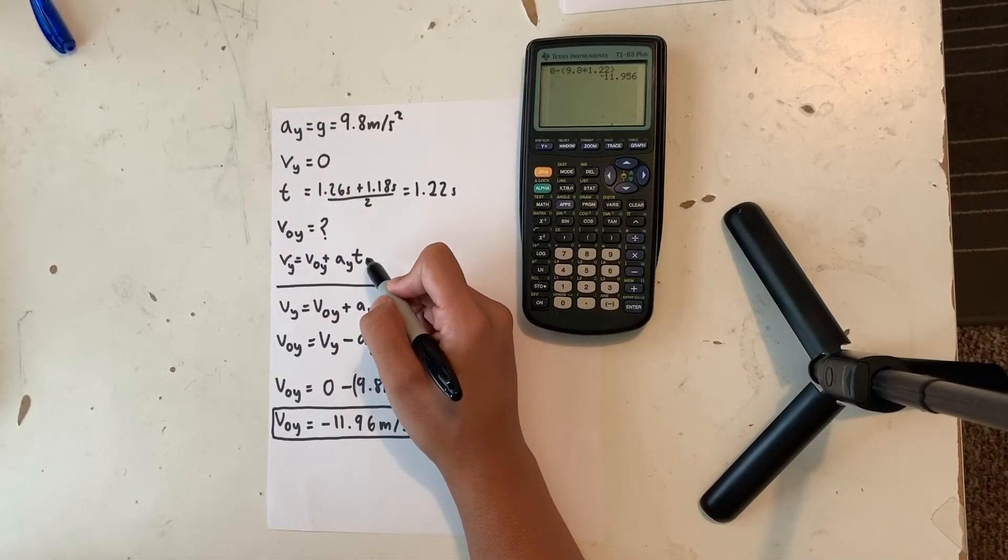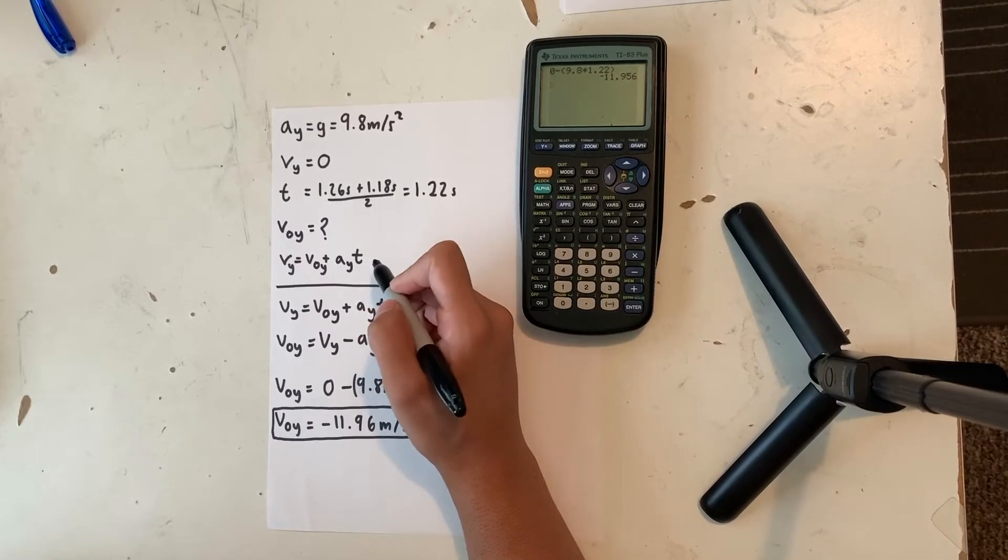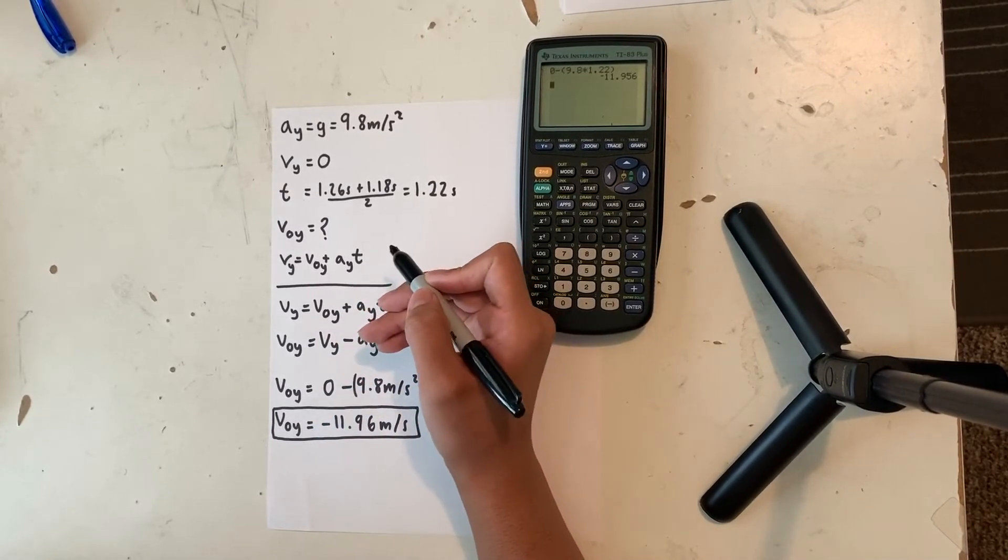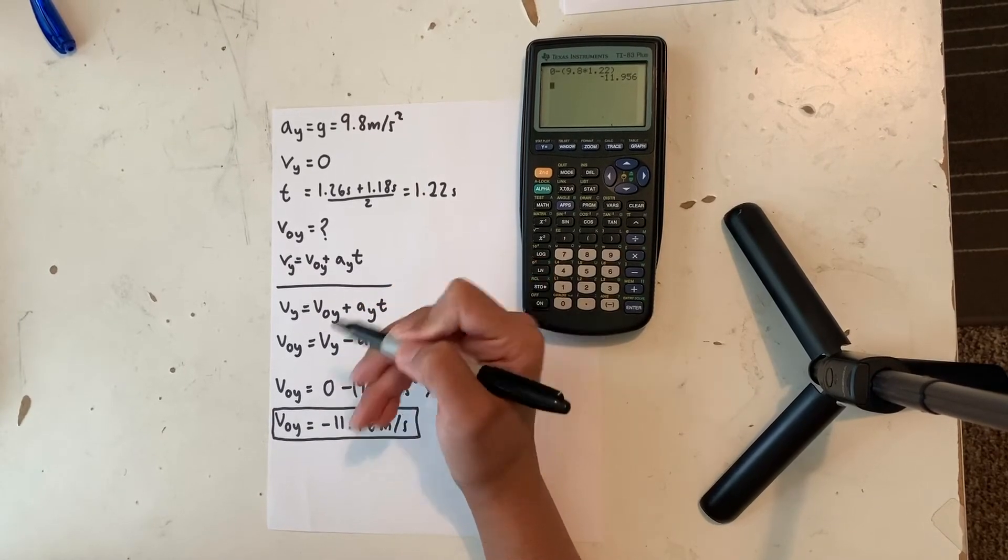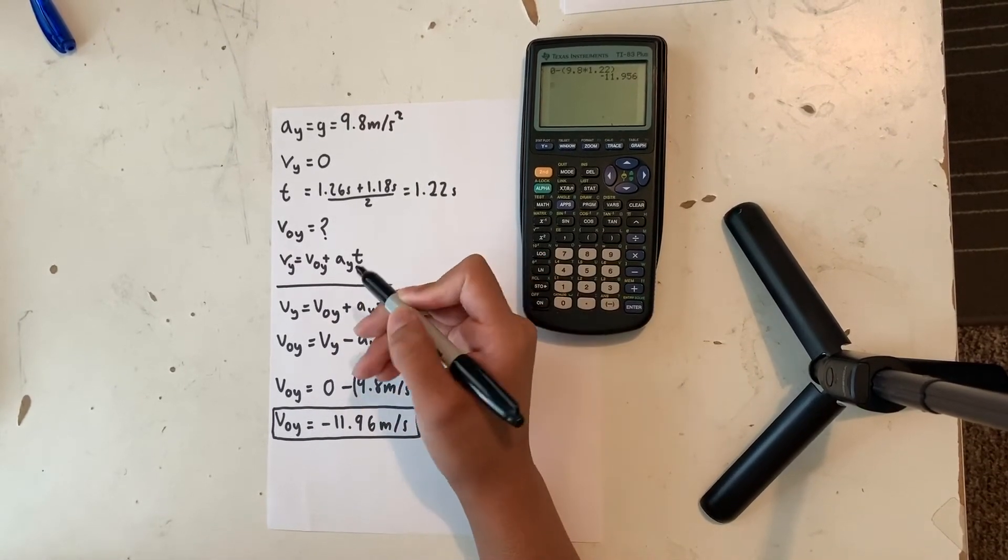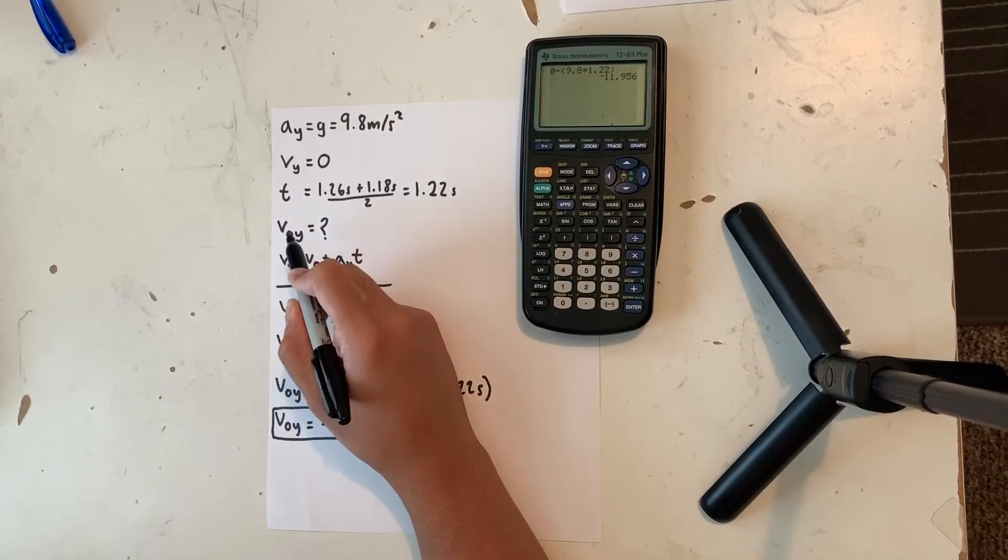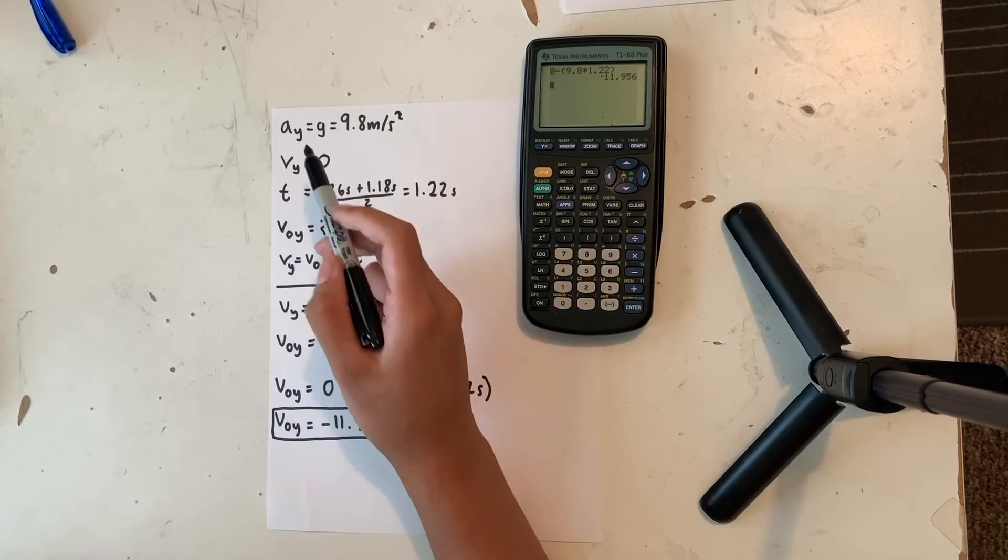Before we do the calculation with the second equation, I'm going to add the subnotation y. The reason y is to specify my direction along the x and y axis. I'm going the downward direction which indicates the y direction. So I'm going to add the subnotation y to my final velocity, my initial velocity, and also my acceleration.